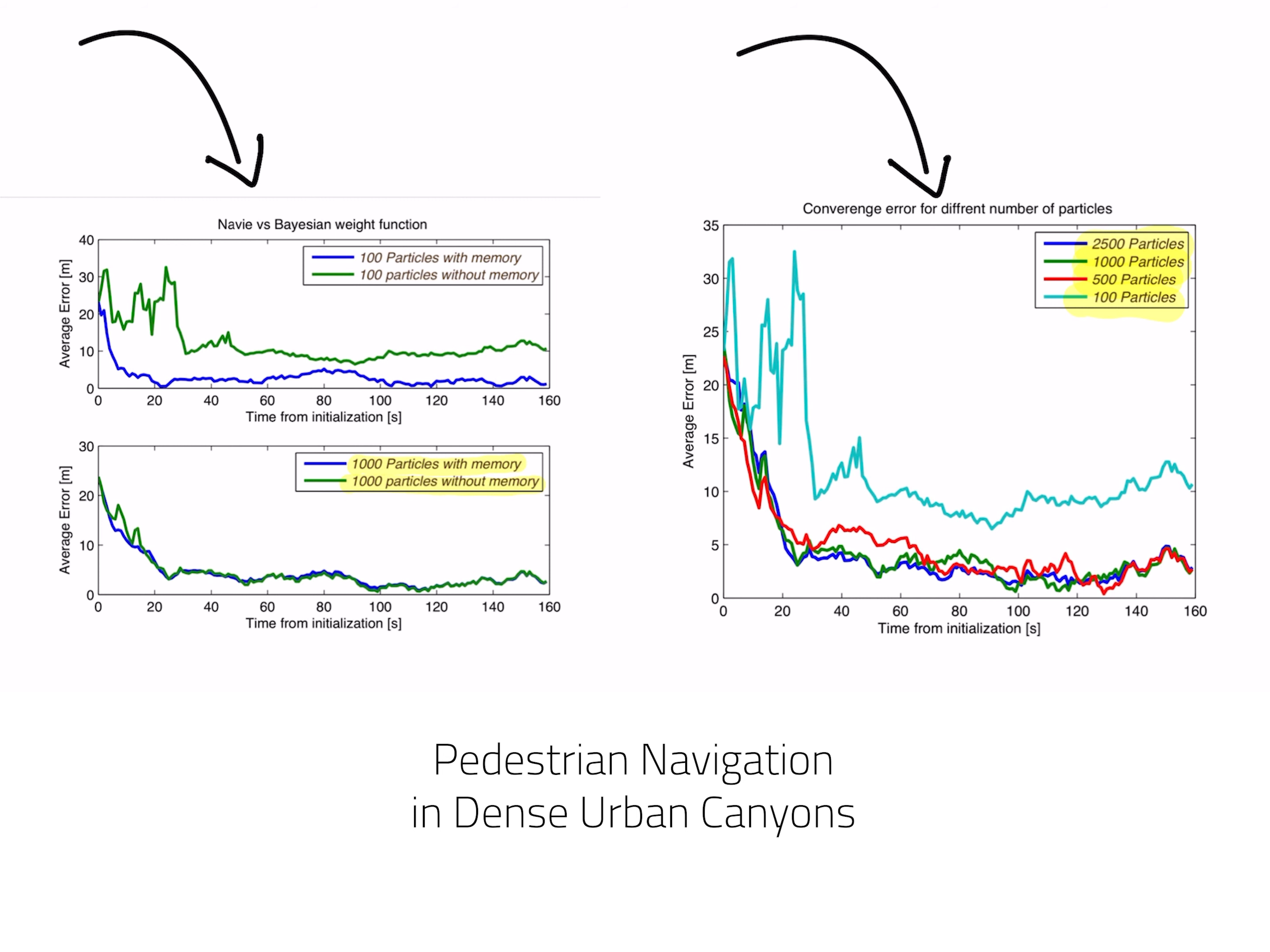is a big difference between those two functions. On the green, I have the 100 particle with no memory, and I can see that the error rate or the accuracy level is very, very high. But when I'm adding the Bayesian weight function, again with only 100 particles, I get much better accuracy level. It costs me nothing. All I needed to do is to incorporate the weight from the previous state. This is very useful in situations when you cannot afford spreading a lot of particles.